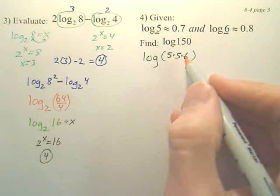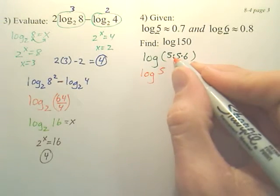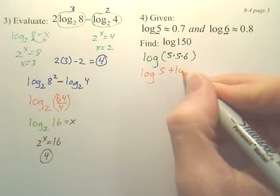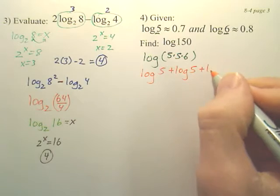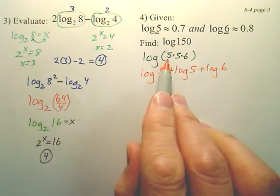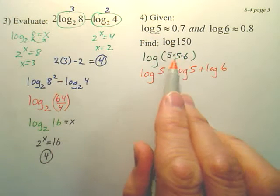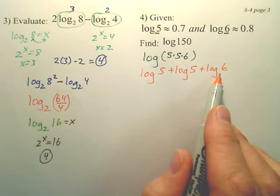Aren't those multiply? Yeah. So that would be log 5. What does multiply mean? Plus. Log 5. What does multiply mean? Plus. Log 6. So 150 is 5 times 5 times 6. Multiplies mean adds, so that's really log 5 plus log 5 plus log 6.